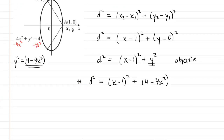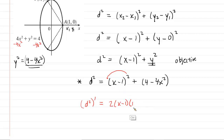The next step is to compute the derivative of our objective equation in one variable. Using the chain rule, the derivative of (x minus 1) squared gives 2 times (x minus 1). The derivative of the constant 4 is 0, and the derivative of the remaining term gives minus 8x. So the simplified derivative is 2(x minus 1) minus 8x.